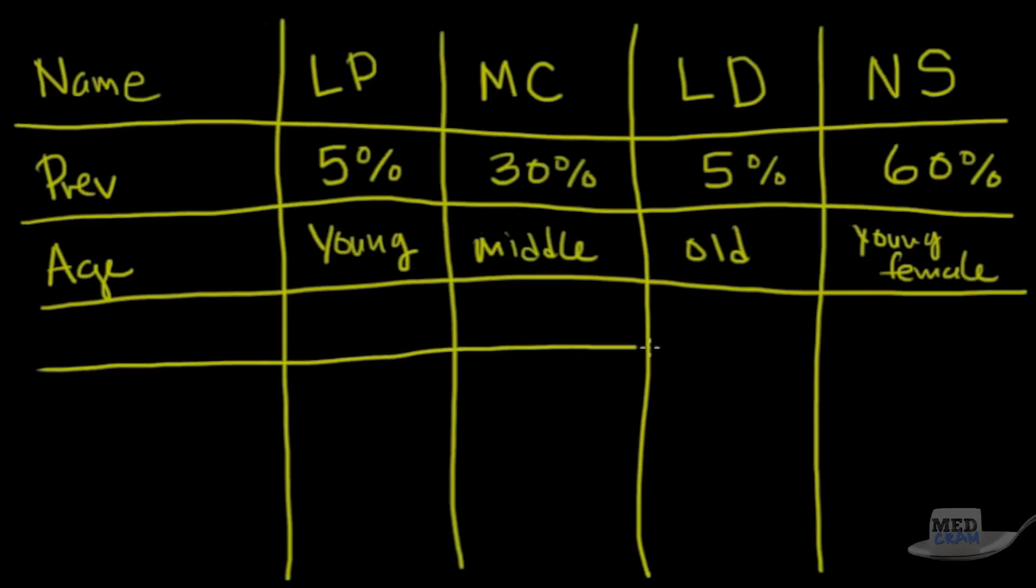The next category that distinguishes these four different types is the Reed-Sternberg cells. Reed-Sternberg cells in lymphocyte predominant is few. Whereas in mixed cellularity, it's moderate. And in lymphocyte depleted, there's quite a bit of them. In nodular sclerosis, it can be variable, but we see collagen around it. That's where they get the nodular sclerosis part from. And there are clear spaces around the Reed-Sternberg cells.